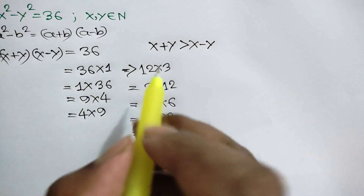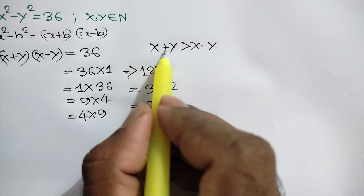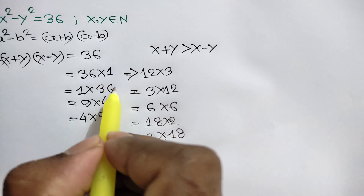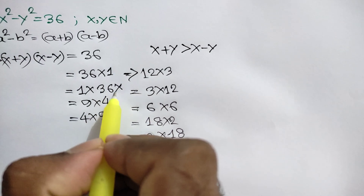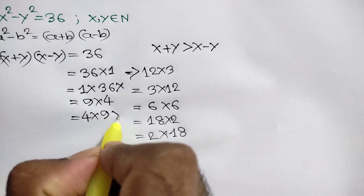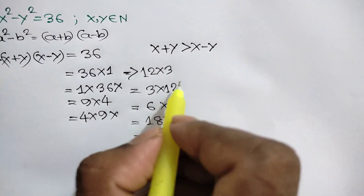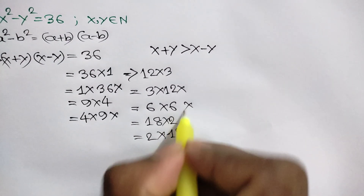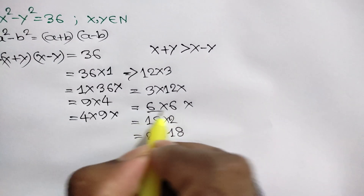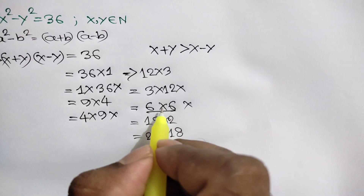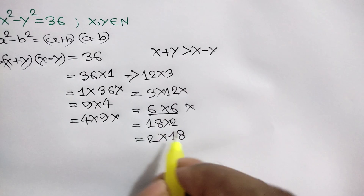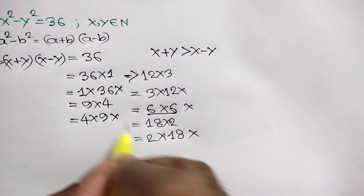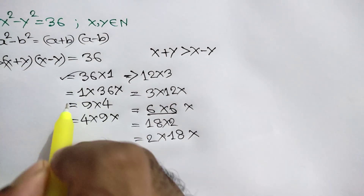But since x plus y must be greater than x minus y, some of these are rejected. Cases where the first factor is smaller than the second are rejected, cases where the two numbers are equal are also rejected, so there are only 4 possible cases.